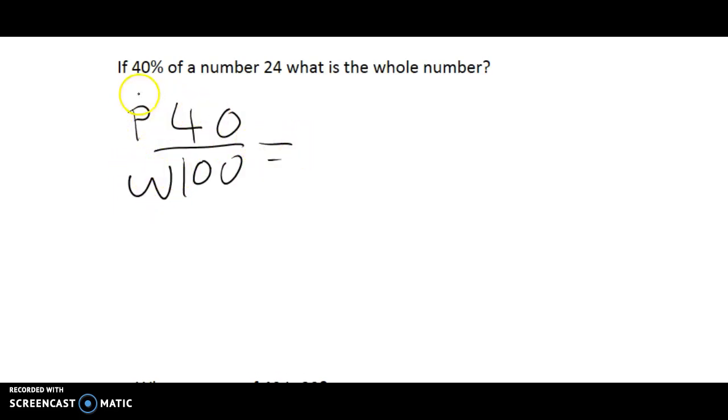Now what happens if I'm missing a different piece of information? So in this question, it says if 40% of a number is 24, what is the whole number? So once again, I'm going to set up my proportional relationship, my fractions. This is my part, this is my whole.